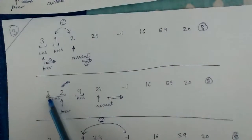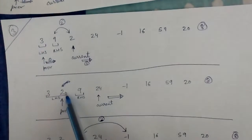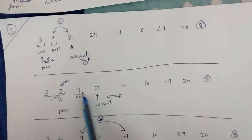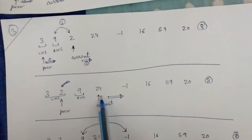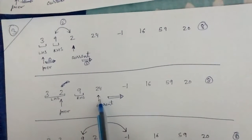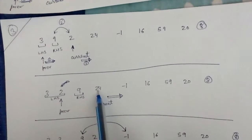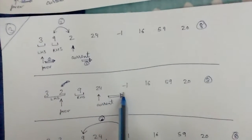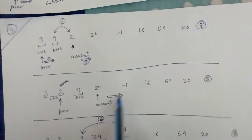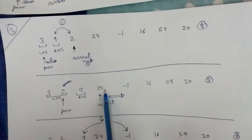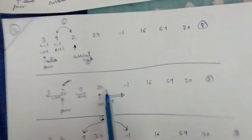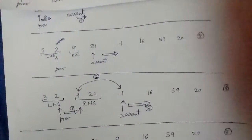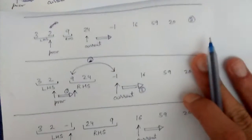LHS size becomes 2 and RHS is still 1. Current is now at 24. Since 24 is greater than 8, we just increment current. Current moves forward and the RHS size expands.